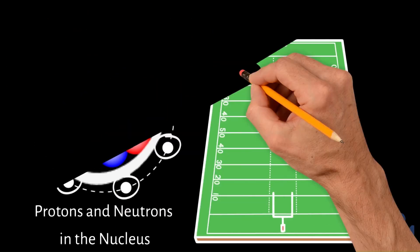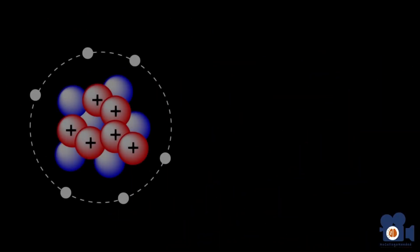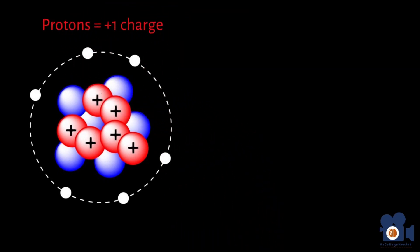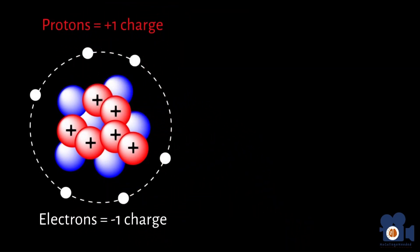Oftentimes in chemistry, you'll see protons and electrons with charges of plus 1 and minus 1. This is just for convenience sake, since they are equal in charge, but opposite in sign.